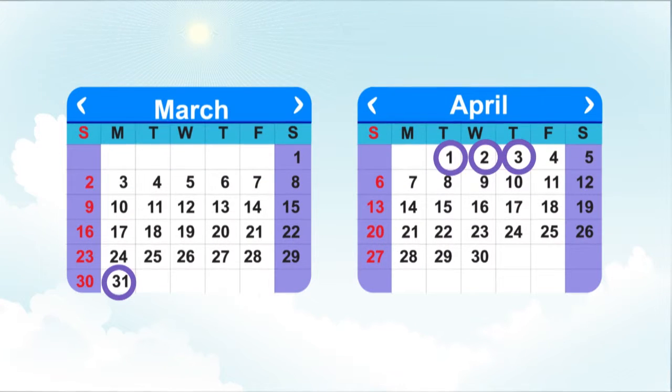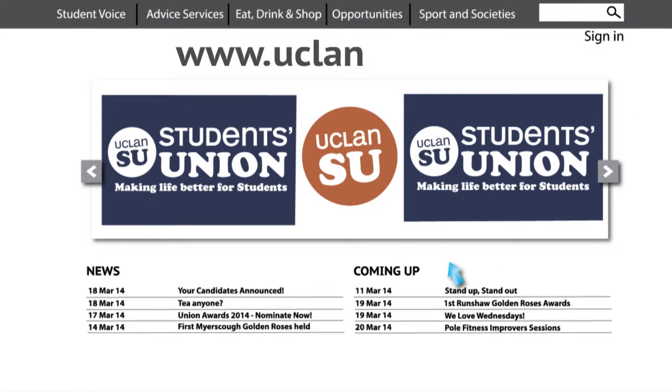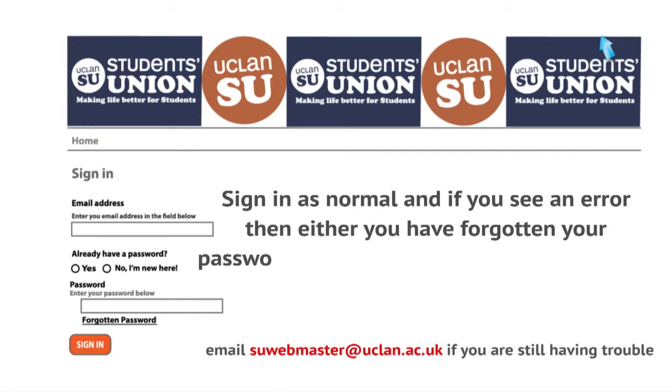Voting takes place from the 31st of March to the 3rd of April 2014, but before you can vote you have to be registered on the SU website. To register go to www.uclansu.co.uk and click on the sign in tab.